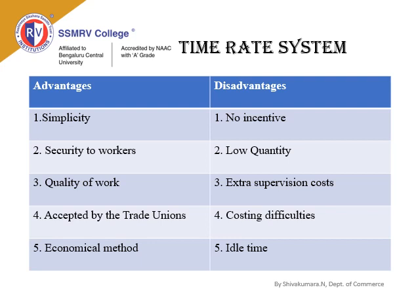Disadvantages of the Time Rate System: First, no incentive — there is no differentiation between efficient and non-efficient workers. A person who is not efficient gets the same salary as an efficient one, so there is no incentive for the efficient worker. Second, low quantity — since the system focuses on quality, there is no motivation to improve the quantitative aspect.